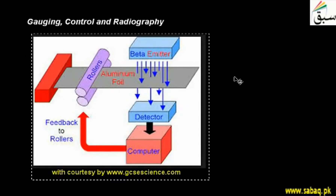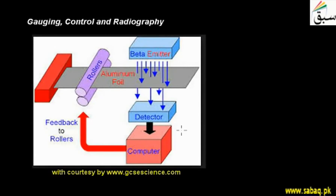You can see here, we have a set-up. There is an aluminum foil attached to some rollers, with many layers attached to it. This material is pressed to a special thickness. There is one source located from which beta particles are being emitted, and beta rays are coming here. The beta rays pass through this aluminum foil and are detected by the detector.